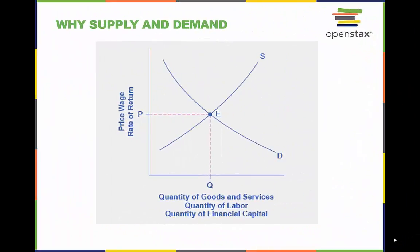This figure displays a generic demand and supply curve. The horizontal axis shows the different measures of quantity: a quantity of a good or service, a quantity of labor for a given job, or a quantity of financial capital.